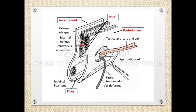To summarize the boundaries: the roof is formed by the internal oblique and transversus abdominis muscles; the anterior wall by the external oblique aponeurosis (with internal oblique laterally); the posterior wall by the fascia transversalis; and the floor by the inguinal ligament. This is the four-centimeter inguinal canal from deep inguinal ring to superficial inguinal ring, through which all contents pass.